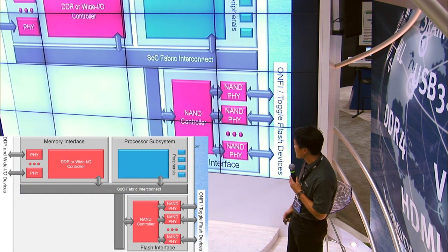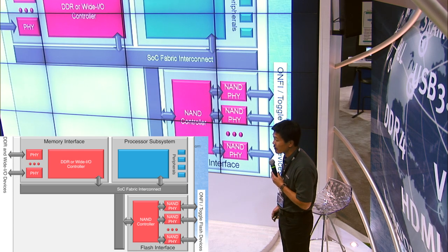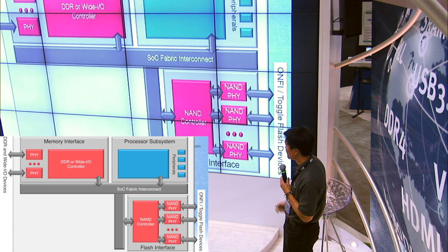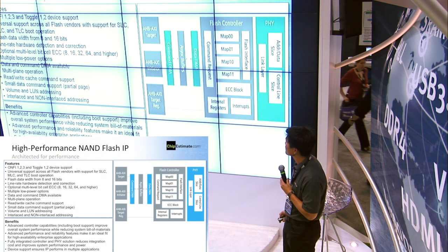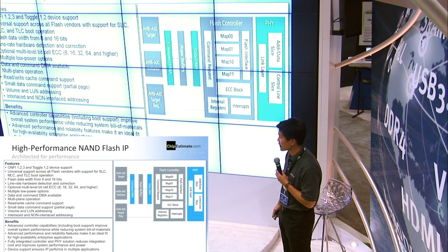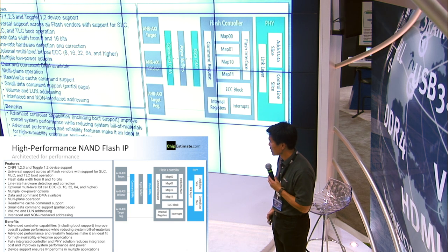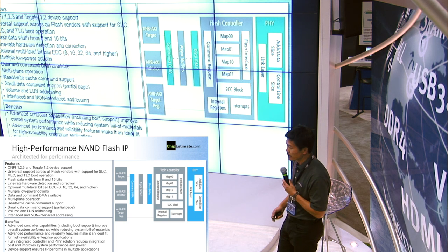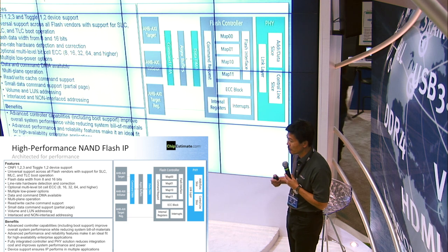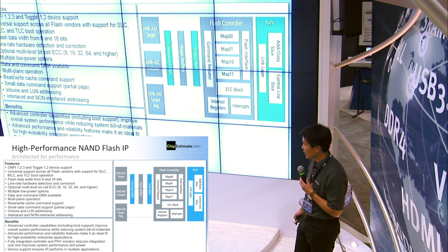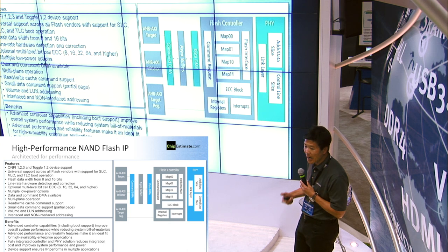We extend the IP subsystems into the NAND flash area with a NAND flash controller and the PHY. The benefits include being able to quickly configure that IP subsystem into your application. It's a fully integrated controller and PHY solution, and it basically reduces your integration time and your design time significantly. It supports all the major devices to ensure that the IP performs in any application and is optimized to your NAND application — it's not a one-size-fits-all solution.